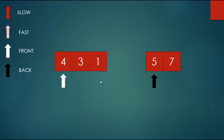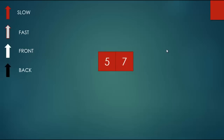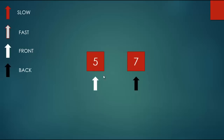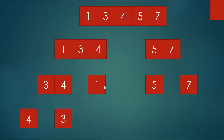I can recursively iterate through these elements and partition them. For two elements, you just split them — front points to one and back points to the other. For example, with our list 4, 3, 1, 5, 7, these get combined later. Let's go back to the partition function and see how the code runs.